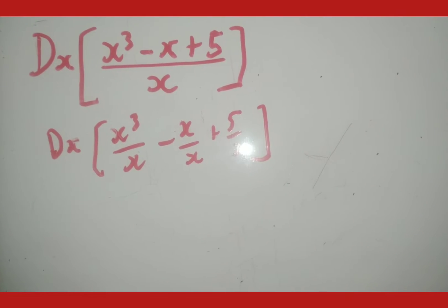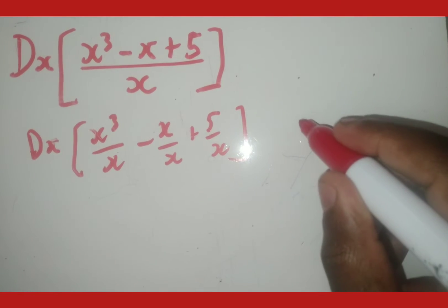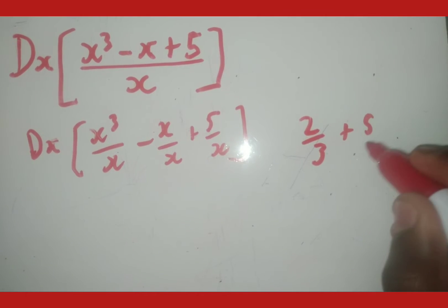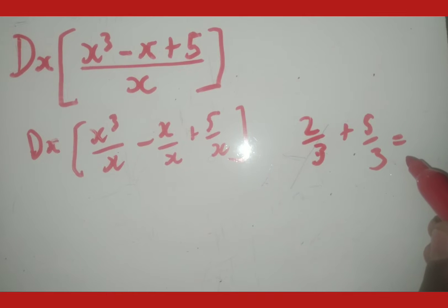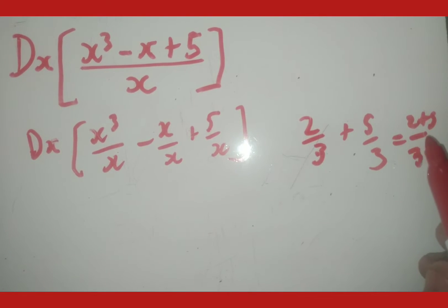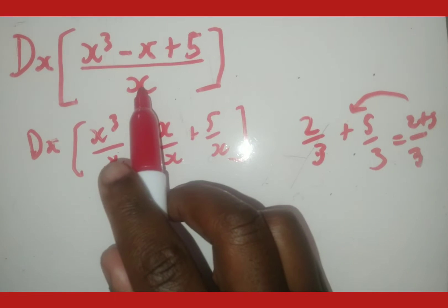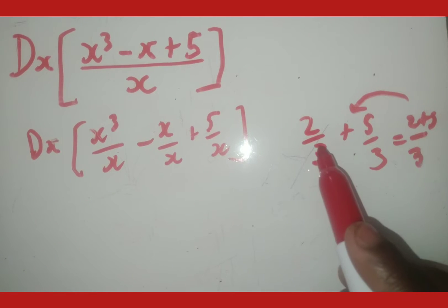Why do we split it? When you are adding fractions with the same denominator, like 2 over 3 plus 5 over 3, you just write the denominator once and add the tops — giving 2 plus 5 over 3. So basically, we're reversing that process: when fractions share a denominator, we can split them.